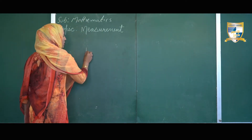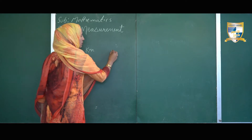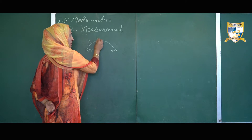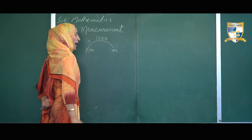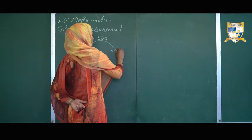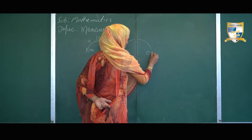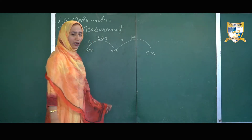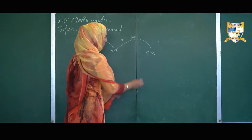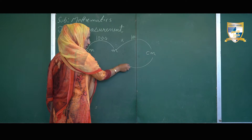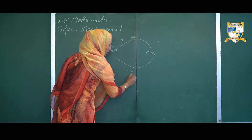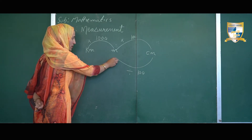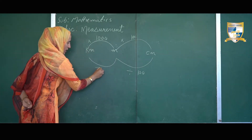For example, we can convert kilometers into meters by multiplying by 1000, and we can convert meters into centimeters by multiplying by 100. Similarly, we can convert a lower unit into a higher one: centimeters into meters by dividing by 100, and meters into kilometers by dividing by 1000.